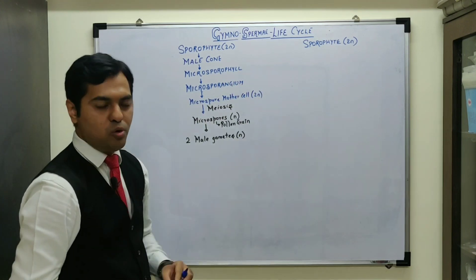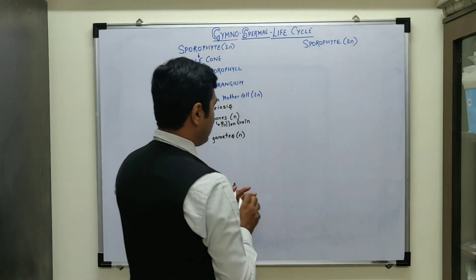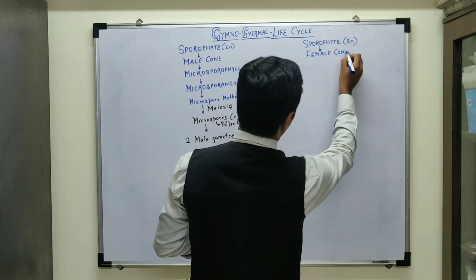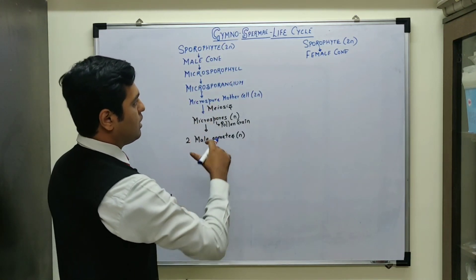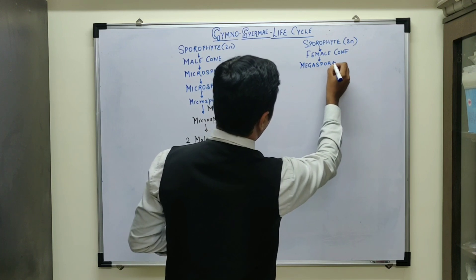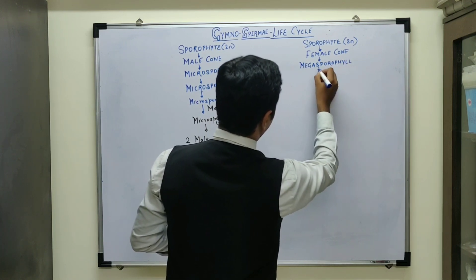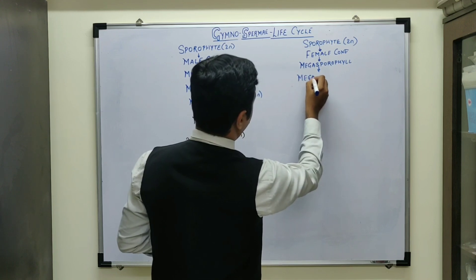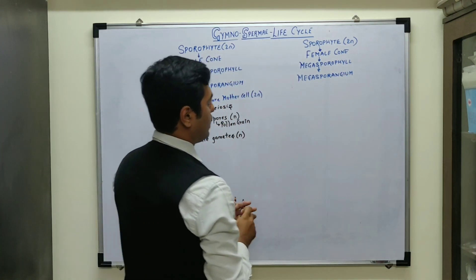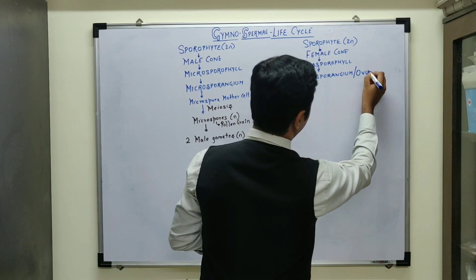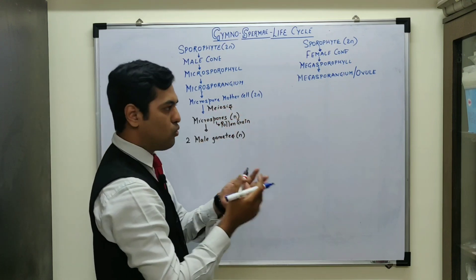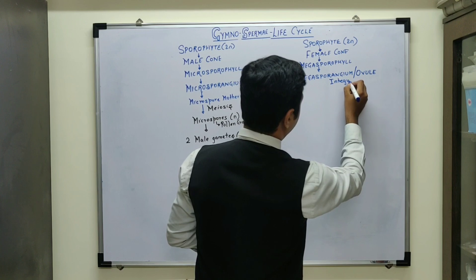When we discuss about the sporophytic female plant body, this sporophyte consists of the female cone. This female cone contains a cluster of leaves known as megasporophyll. Inside the megasporophyll there is development of a structure known as megasporangium. In fact, this megasporangium is actually known as the ovule. So ovule is considered as the megasporangium. This ovule contains a covering known as integuments; hence we also call it an integumented megasporangium.